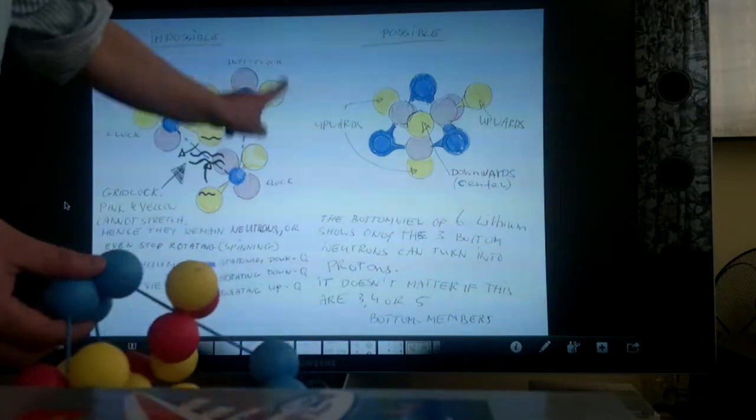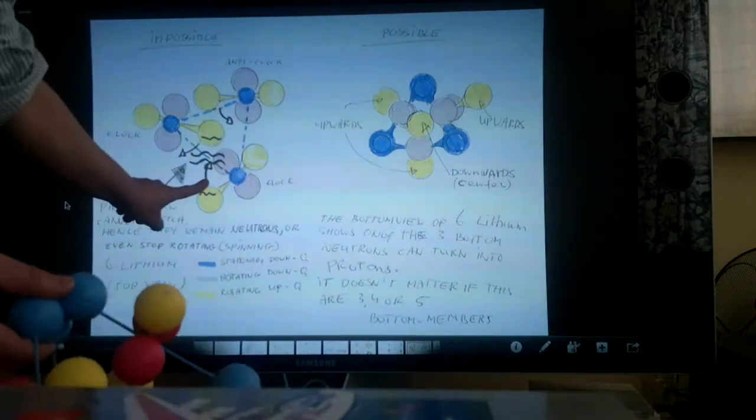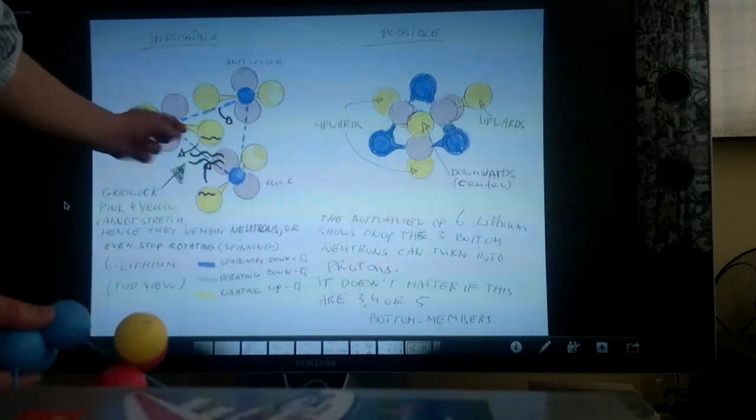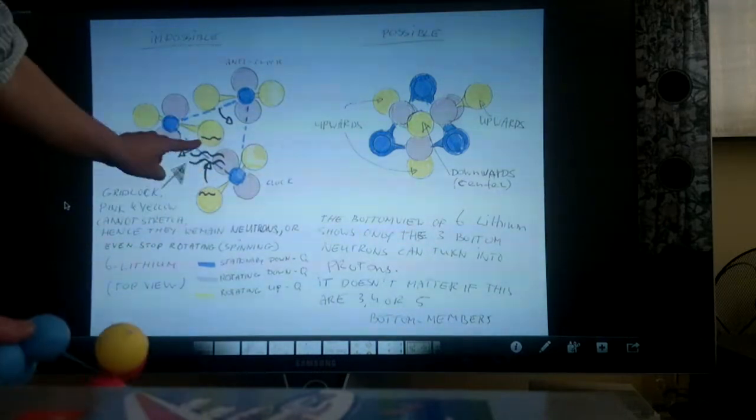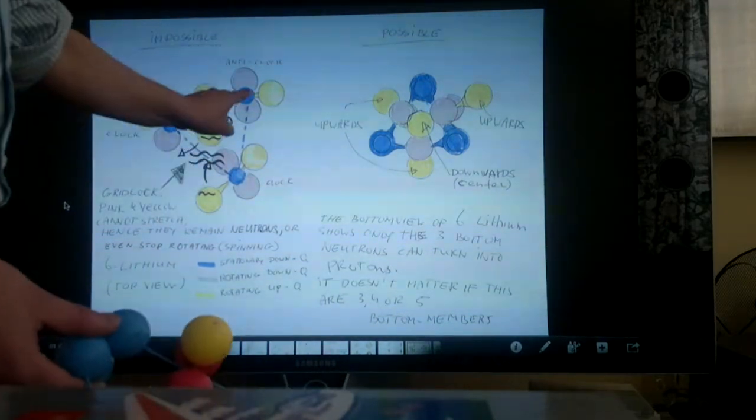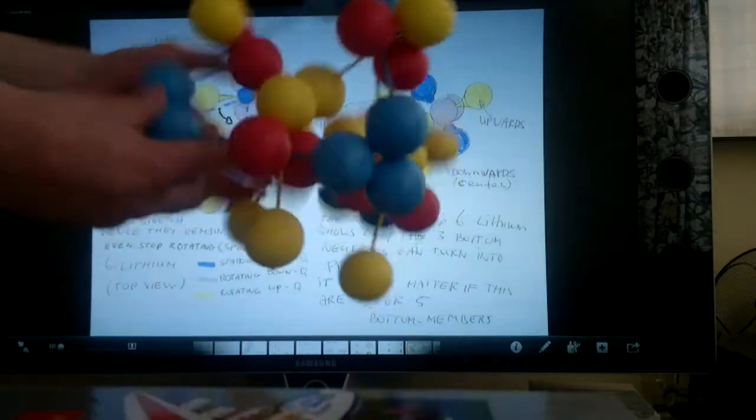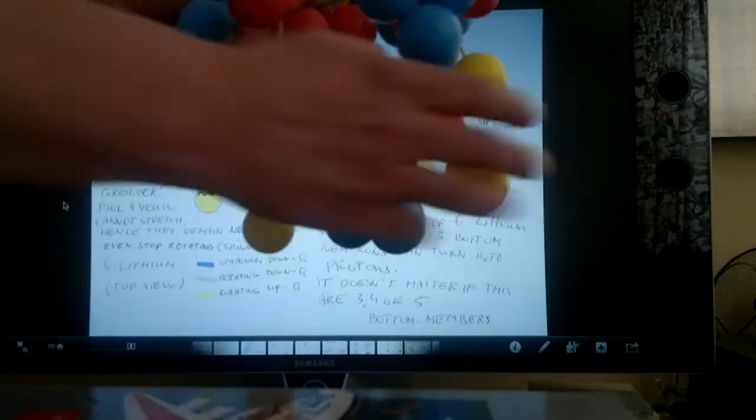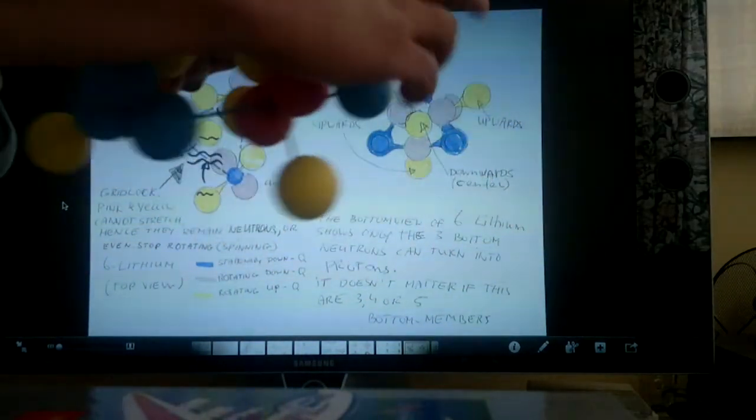Clockwise means this one goes anti-clockwise, means this one goes clockwise and there we have our problem. Both go clockwise, means they cannot exist. So, these three - this one, this one and this one - can't spin together.